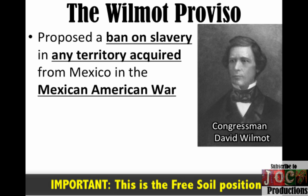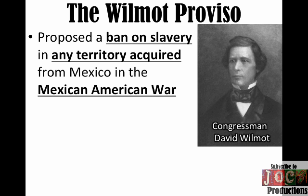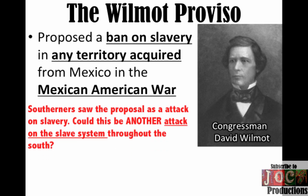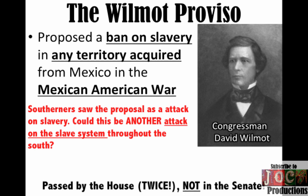Southerners looked at this situation and it brought back flashbacks of the Talmadge Amendment. They said: are you trying to ban slavery? Is this another attack on the slave system? The Southern way of life? They were not going to stand for it. This Democrat from Pennsylvania, a Northerner, put forward the Wilmot Proviso — it passes the House of Representatives twice, but it's defeated in the Senate because of the balance of power. And so the Wilmot Proviso goes down in flames.